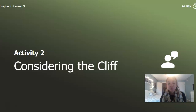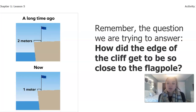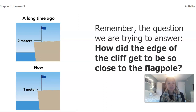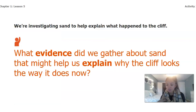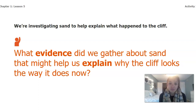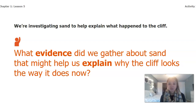Now we're going to go back to our initial question, which was looking at the cliff. The question we are trying to answer is: how did the edge of the cliff get to be so close to the flagpole? In the top picture the flagpole was further away from the edge, and now we see it is much closer. We're investigating sand to help explain what happened. One really important thing we've learned through this entire chapter is that things can change shape — whether that is sand or landforms — and that's probably what is happening to our cliff.